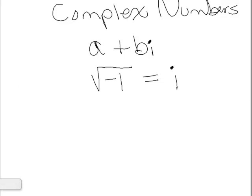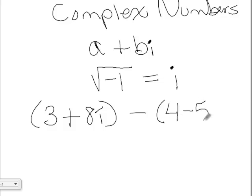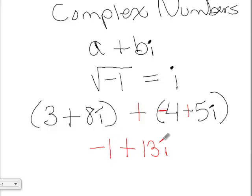The same thing happens when you're subtracting. So let's say that you have a complex number like 3 plus 8i, and you are subtracting from that 4 minus 5i. The first thing we do is distribute our subtraction — turn it into a plus and change all the signs of everything in the parentheses. Now we combine like terms: 3 and negative 4 makes negative 1, and 8i plus 5i makes 13i. So the basic operations of adding and subtracting work exactly the same as with x's.